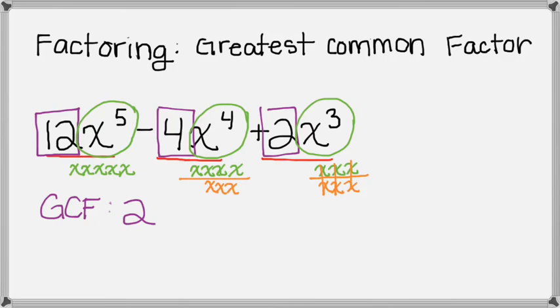But x to the 4th is also divisible by x cubed because of that same property leaving an x, and then the same thing for x to the 5th.